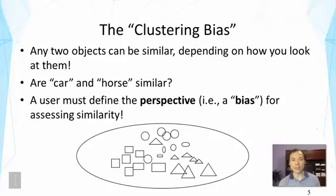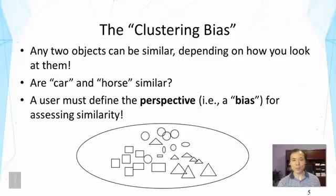In order to make the clustering problem well defined, a user must define the perspective for assessing similarity. We call this perspective the 'clustering bias.' When you define a clustering problem, it's important to specify your perspective for similarity, because otherwise one can have different ways to group objects. Let's look at a concrete example — you're seeing shapes very similar to what you saw on the first slide, but you might feel there's more uncertainty here.